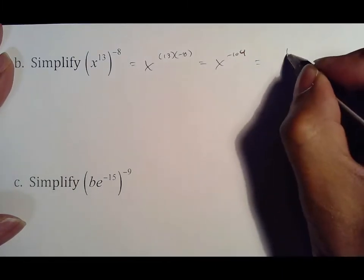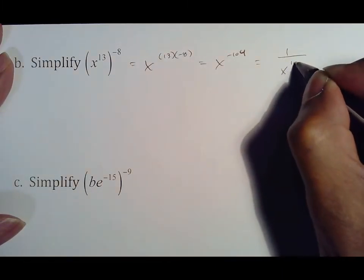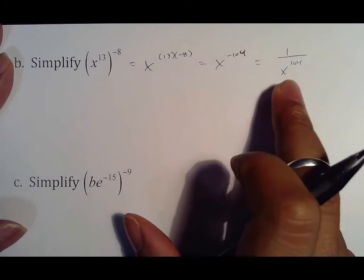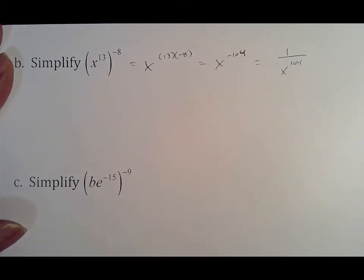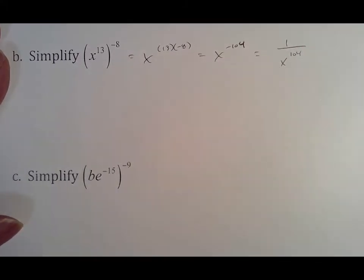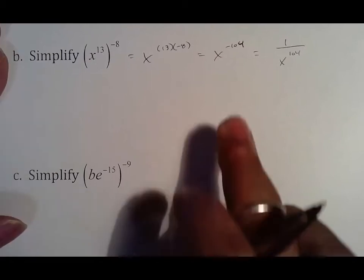A negative exponent means it wants to move. If the computer marks you wrong for putting that, switch it, but understand this is the right answer for any teacher, not the computer. Remember the computer just goes off of what the programmer told it, but the programmer might not remember to switch it.